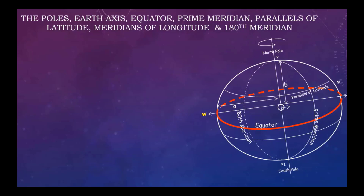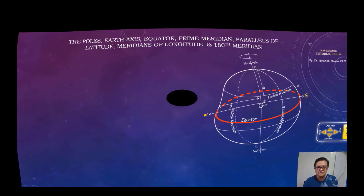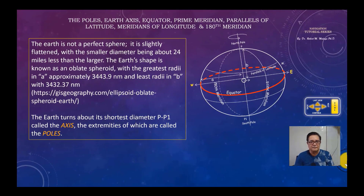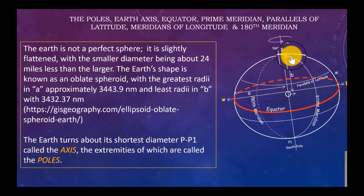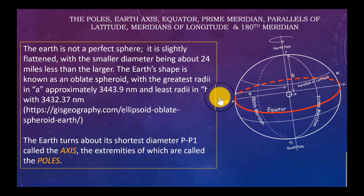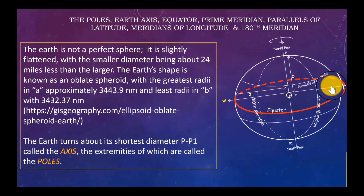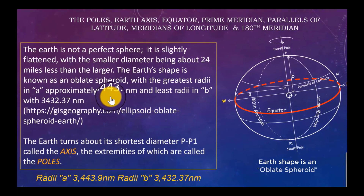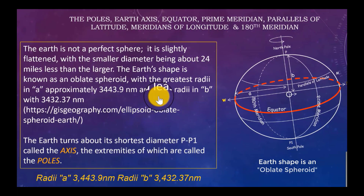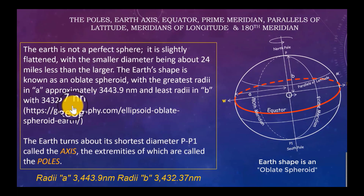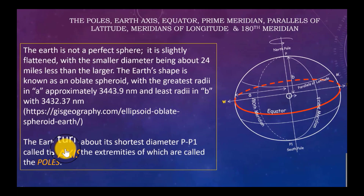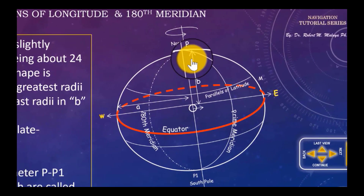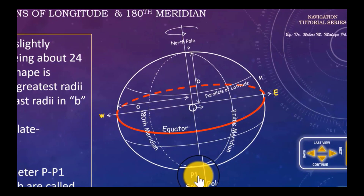You can also describe a great circle and a small circle, differentiate between them, and describe the international date line. The Earth is not a perfect sphere — it is slightly flattened, with its smaller diameter being 24 miles less than the larger diameter. Its shape is known as an oblate spheroid, with a greatest radius (a) of approximately 3,443.9 nautical miles.